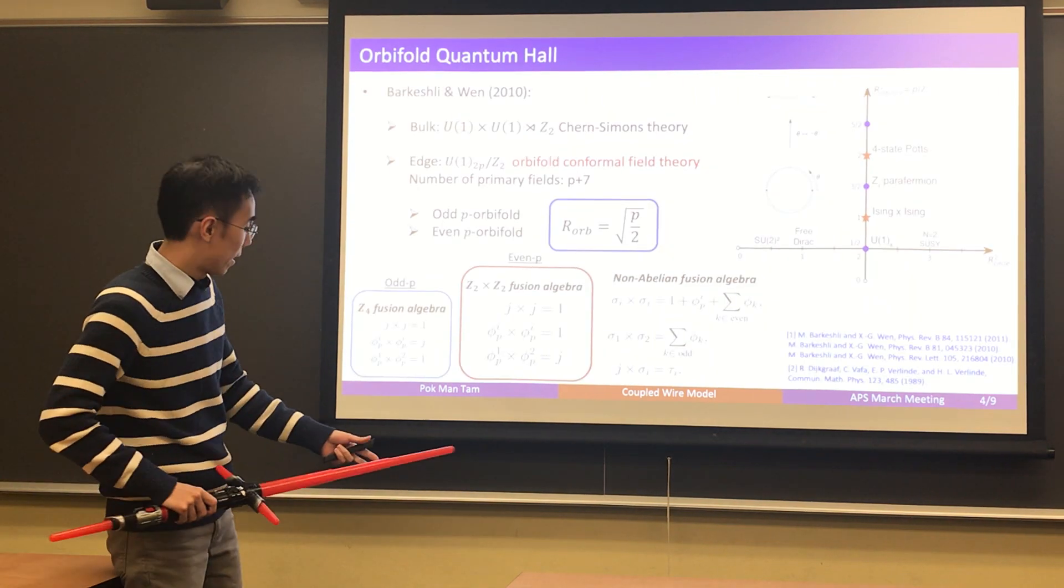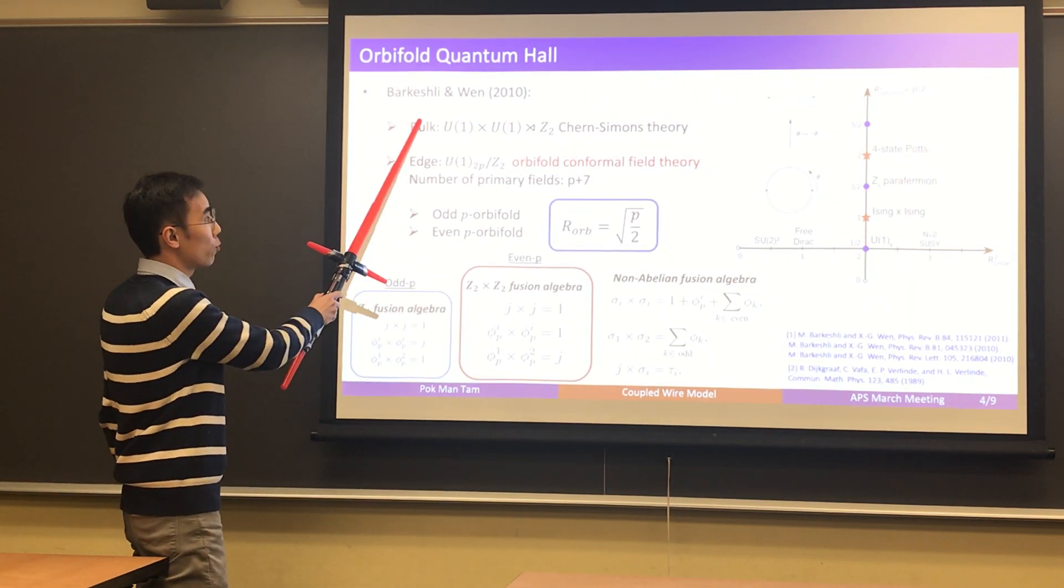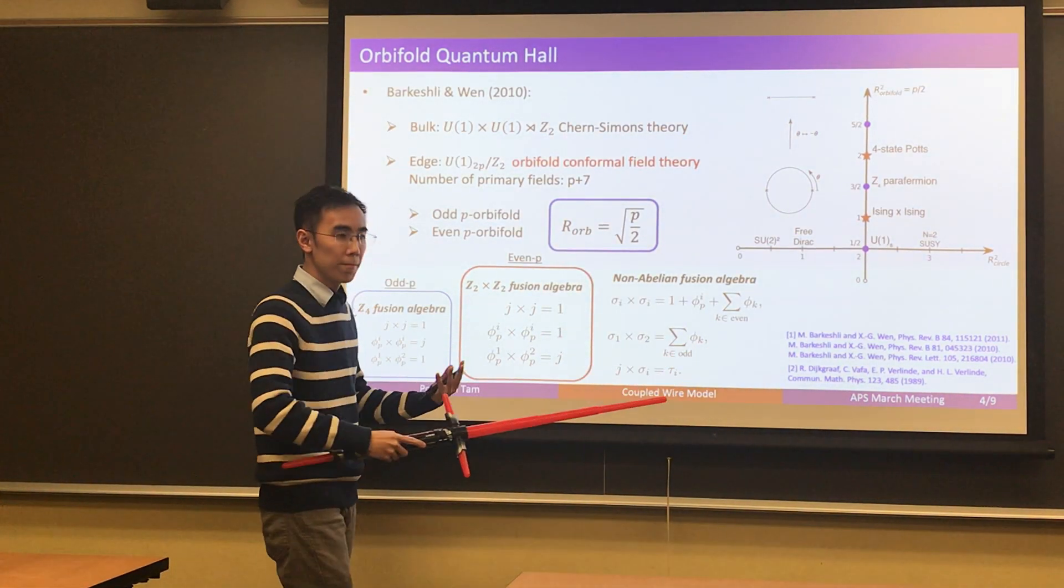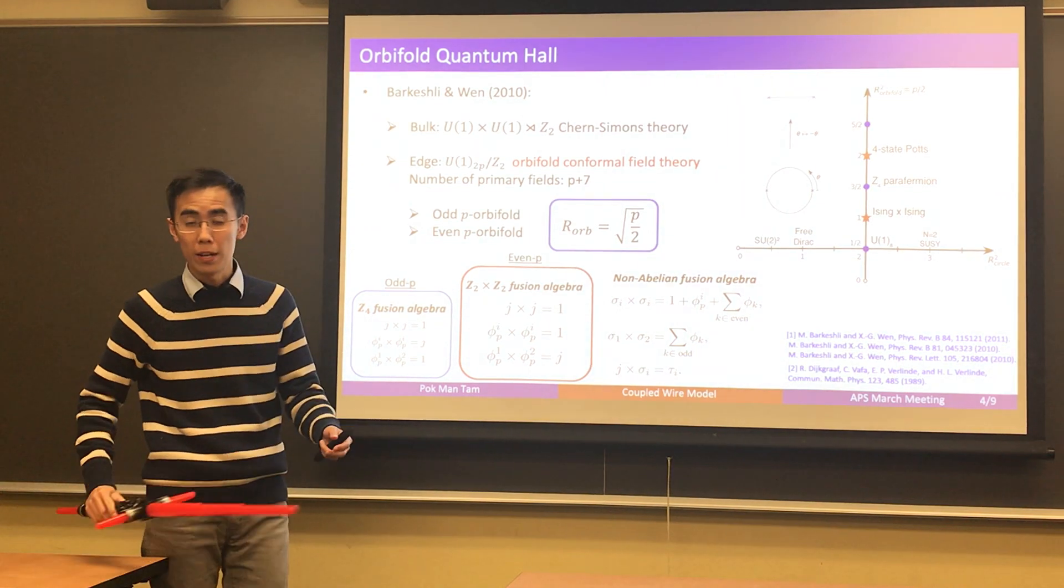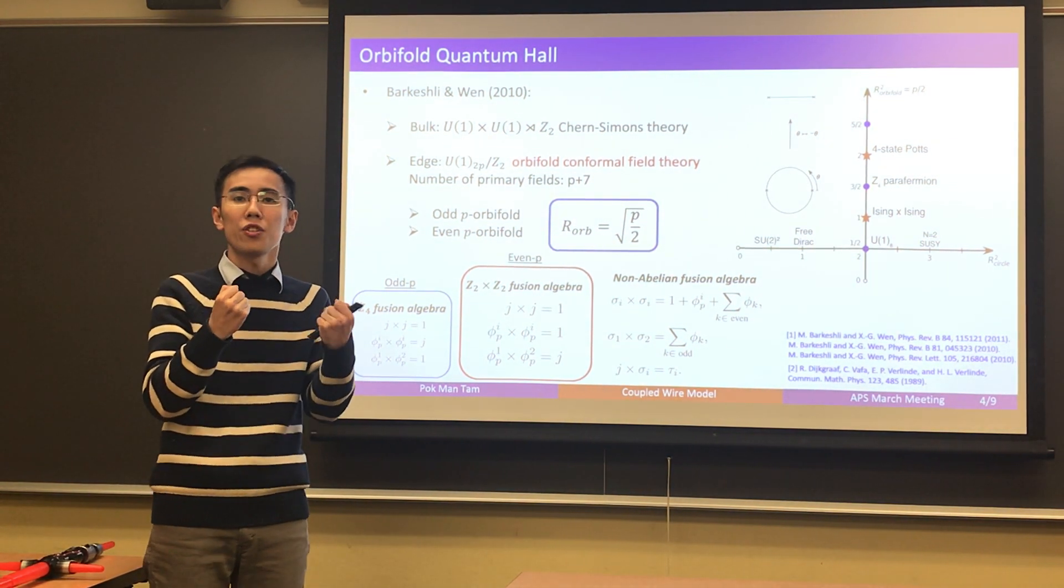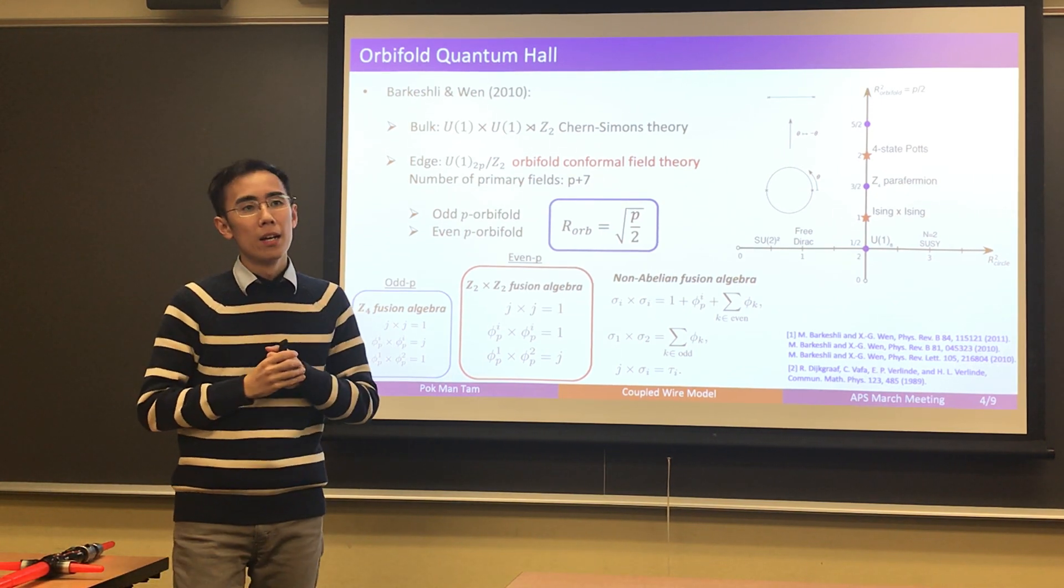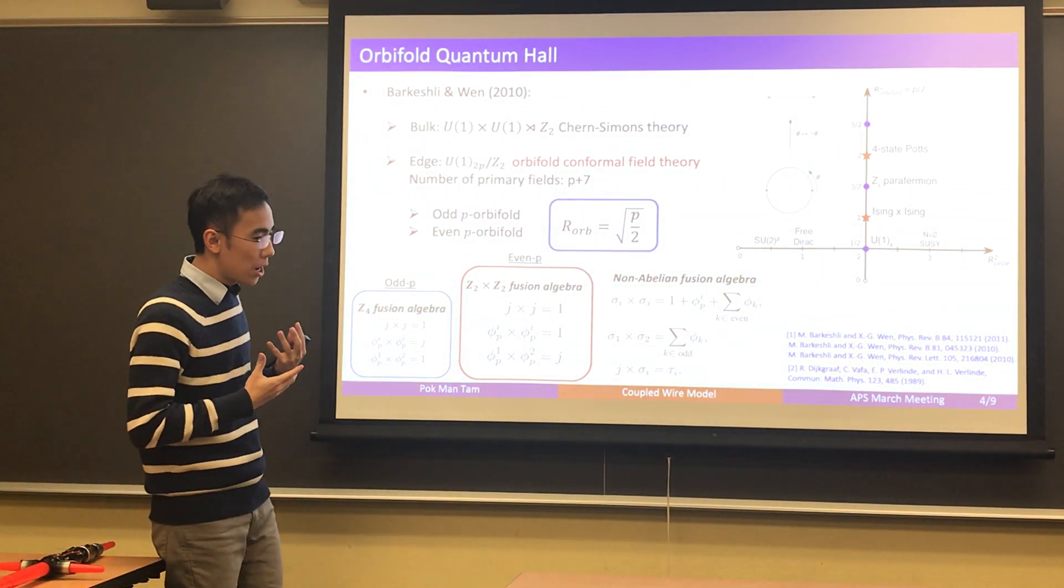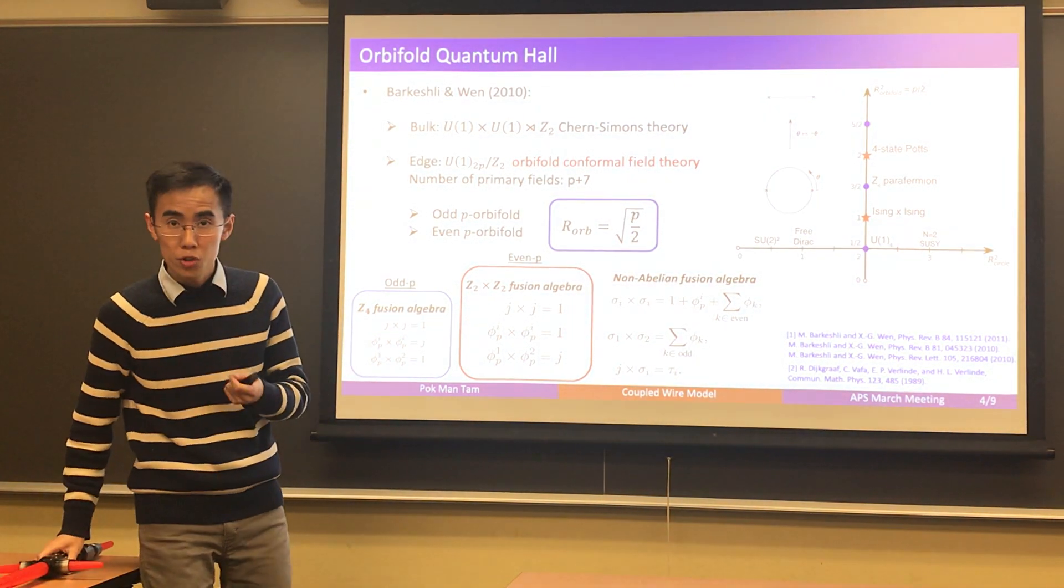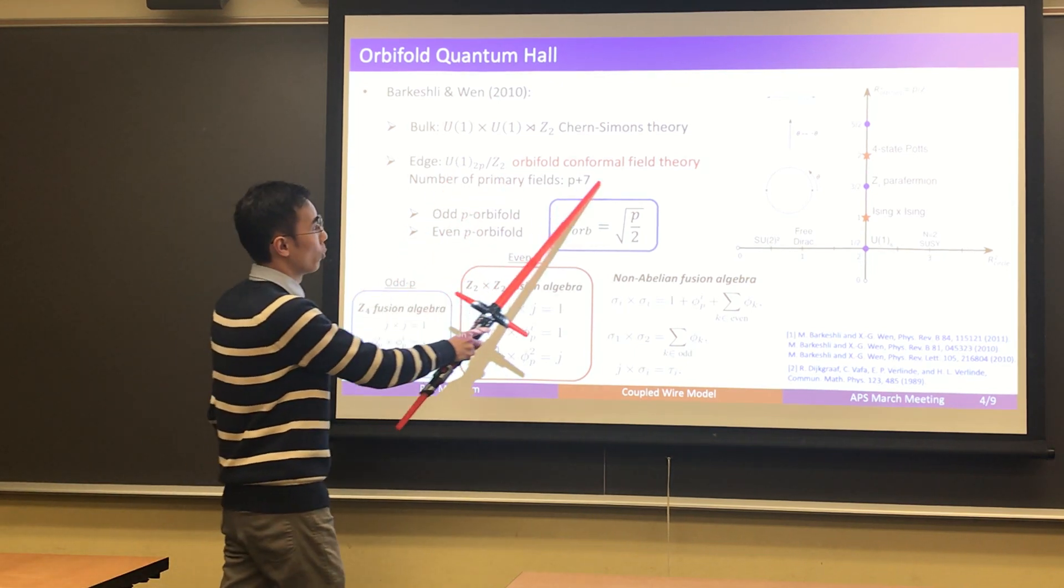One particular example is provided by this orbital quantum Hall states predicted by Prakash and Wen back in 2010. In a series of papers they wrote down a type of effective Chern-Simons theory that has two types of U(1) gauge fields and an additional Z2 gauge symmetry that interchanges these two gauge fields. What they found is that this type of effective field theory would describe fractional quantum Hall states whose neutral sector is described by this U(1)/Z2 orbifold conformal field theory.